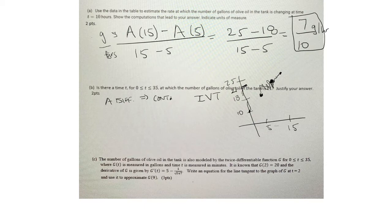Okay, so for a tangent line, we need a point and a slope. We're given g of 2 is 20. So the point is 2 comma 20.